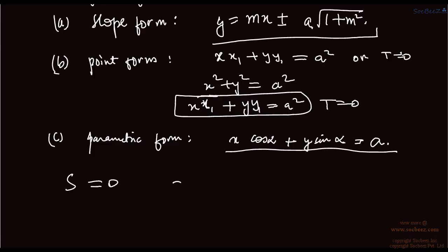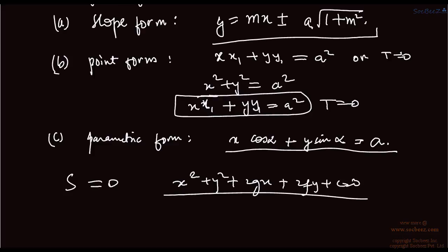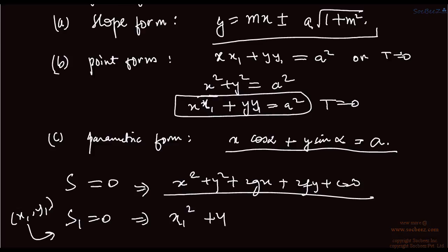Whenever S equals 0, this implies x squared plus y squared plus 2gx plus 2fy plus c equals 0 — that is the general circle. If S1 equals 0, this implies we have a point x1, y1 and we put this point into the circle, giving x1 squared plus y1 squared plus 2gx1 plus 2fy1 plus c. This will be your S1.